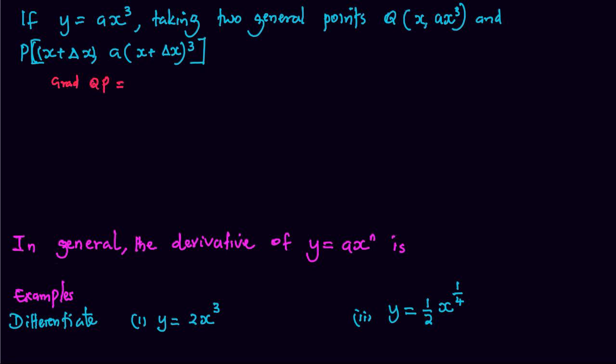Gradient QP is equal to change in y which will be A into x cubed plus 3x squared delta x plus 3x delta x squared plus delta x cubed minus Ax cubed divided by x plus delta x minus x.